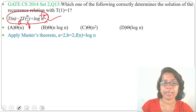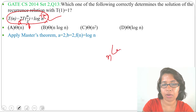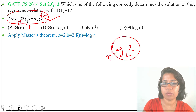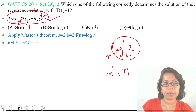After finding a, b, and f(n), we need to find n^(log_b a). Since a = 2 and b = 2, we get log base 2 of 2 = 1, so n^(log_b a) = n^1 = n. We have found that n^(log_b a) equals n.